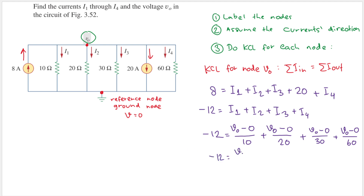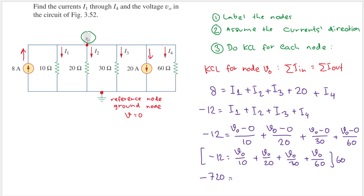Since v0 − 0 is just v0, the KCL equation becomes: −12 = v0/10 + v0/20 + v0/30 + v0/60. We multiply both sides by 60 to clear the denominators, giving: −720 = 6v0 + 3v0 + 2v0 + v0.